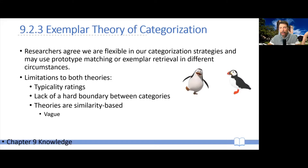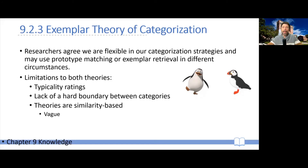Take two animals: a penguin and a puffin. Are they similar? Well, yes — they're very similar, almost cousins in a sense. They have similar coloring and tend to live in similar types of environments. So they seem extremely similar. However, puffins actually fly, so in that sense, they're very different.